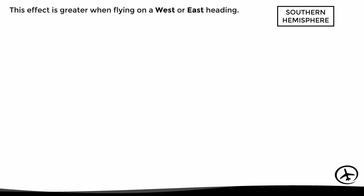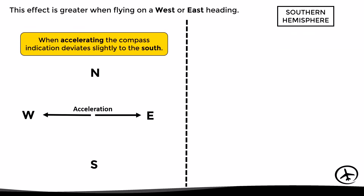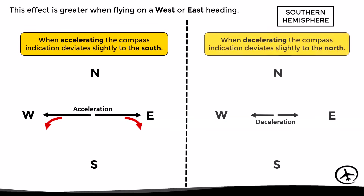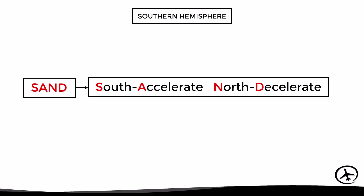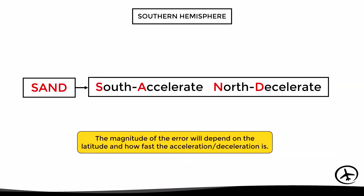In summary, this effect is greatest when flying on a west or east heading. In the southern hemisphere, when the aircraft accelerates the compass indication deviates slightly to the south, while when the aircraft decelerates the compass indication deviates slightly to the north. We can easily remember this with the acronym SAND, which stands for South Accelerate North Decelerate. Just like in the northern hemisphere, the magnitude of this acceleration error will depend on the latitude and how fast the acceleration or deceleration is.